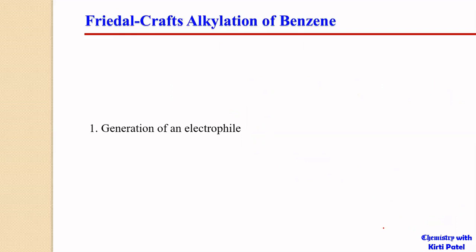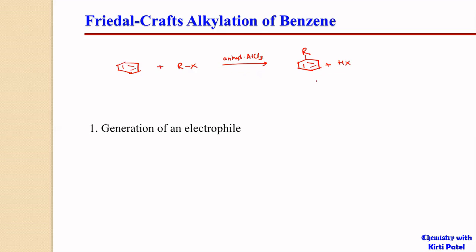Now, in Friedel-Crafts alkylation of benzene, whenever benzene is reacted with an alkyl halide in the presence of a catalytic amount of a Lewis acid such as anhydrous AlCl3, we will get alkyl benzene as the product and HX as the byproduct. This type of reaction is called a Friedel-Crafts alkylation reaction, where the alkyl group is getting added into the benzene ring.